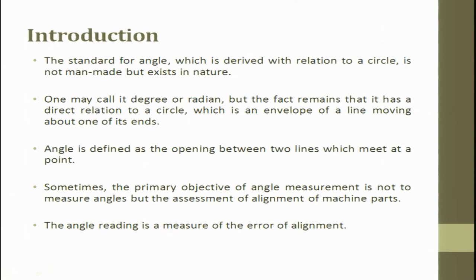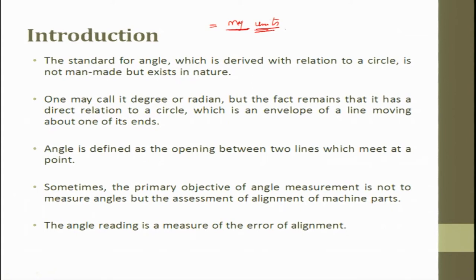One may call it degree or radians — these will be the units. In metrology, which is the science of measurement, we have a magnitude and a unit. These units are very important — it can be in microns or in radians. Once in radians, you can convert it back into a linear scale in microns. When measuring angles, we always report in terms of degrees and radians.